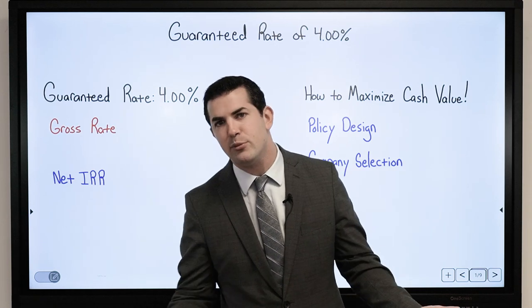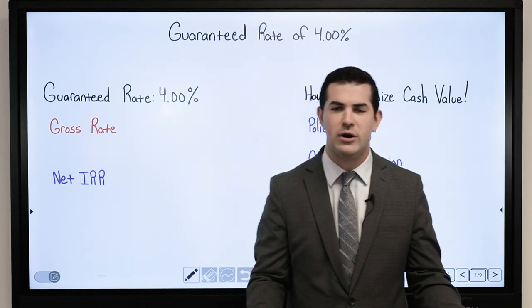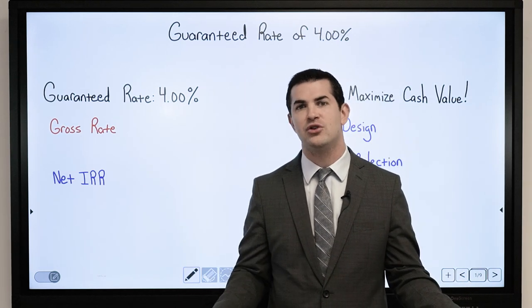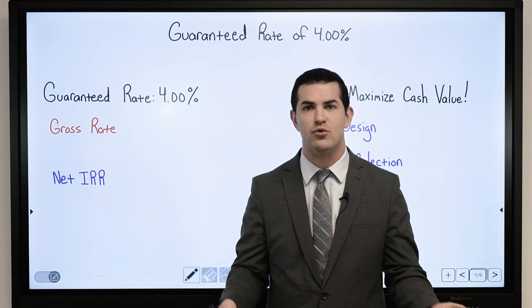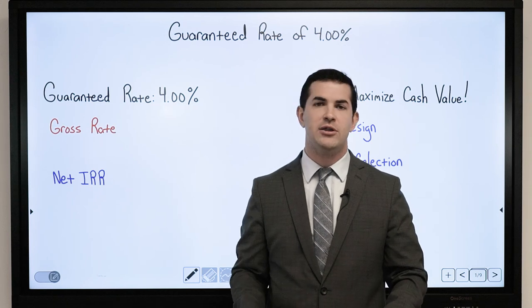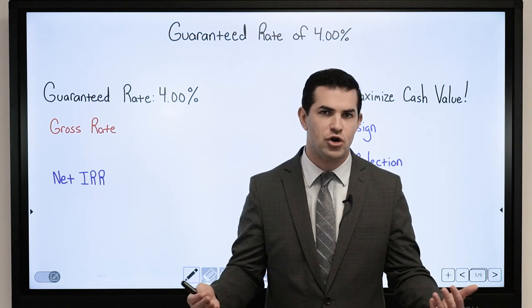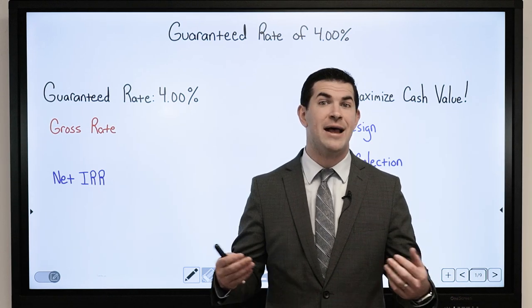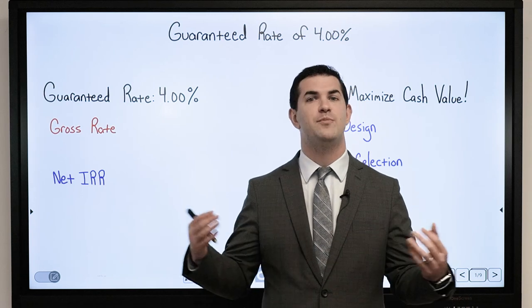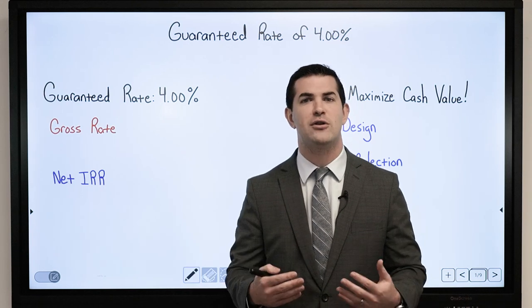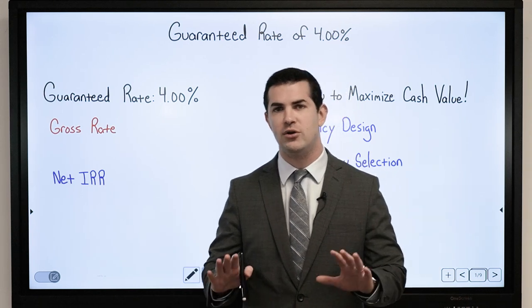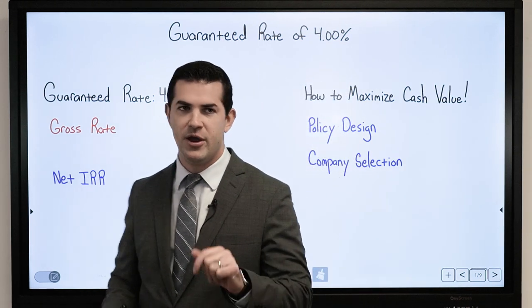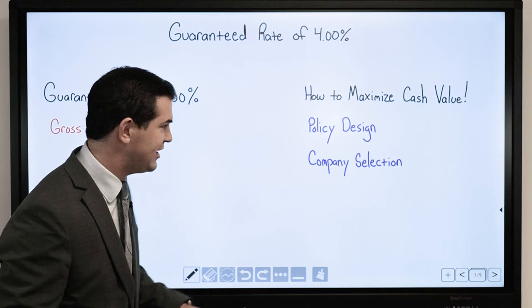Well, it could be a number of factors — what kind of fees and loads do they have associated with different riders? Their term insurance charges, their mortality expenses, their insurance expenses — there could be a lot of factors that play into it. I don't mean to get too technical here; we're going to look at an example.